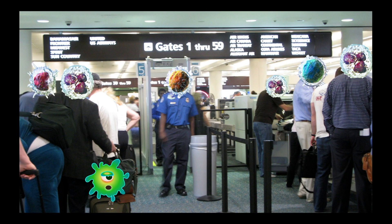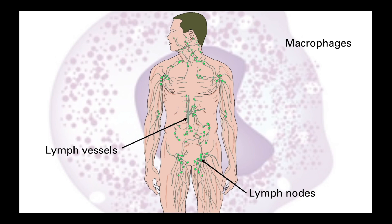The lymphatic system takes some of the fluid out of the blood and helps it recirculate the body, but at the same time screens that fluid for any potential threats. It is not just a parallel series of vessels — it also contains a series of additional checkpoints called lymph nodes. These lymph nodes contain macrophages and dendritic cells that can deal with minor threats directly via phagocytosis, but can also trigger and activate the immune system to help deal with more severe threats.